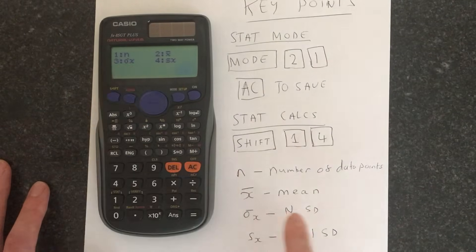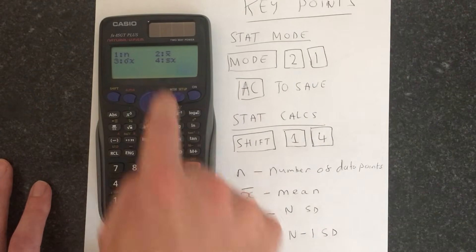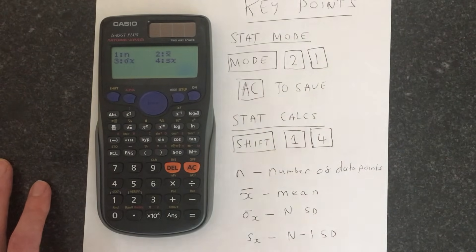If you want the sigma X1 that gives you the standard deviation divided by N, and then the SX gives you the N minus 1 standard deviation.